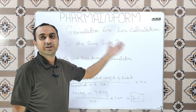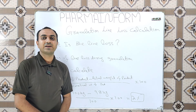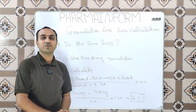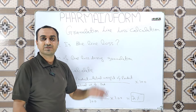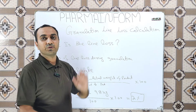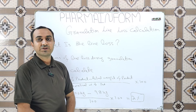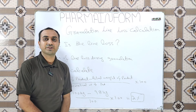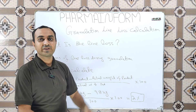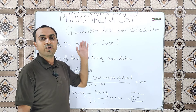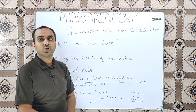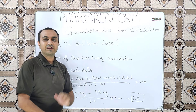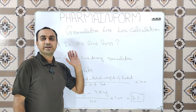So what is line loss? The loss of material during various manufacturing stages is known as line loss. In the granulation process, the loss of material during various stages of the granulation process is known as granulation line loss.